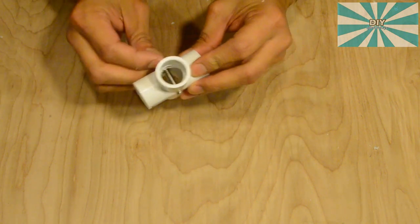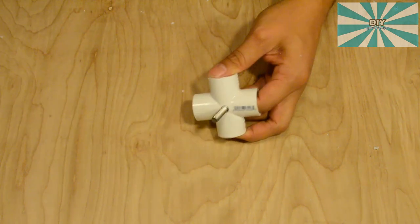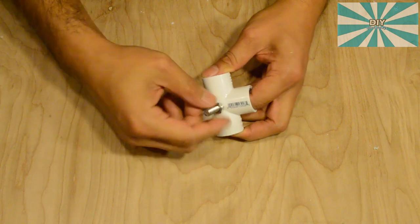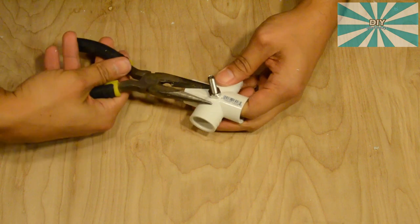Insert the screw through the side with the big hole and hold it with your finger while you screw on the hex nut. Tighten it with pliers.